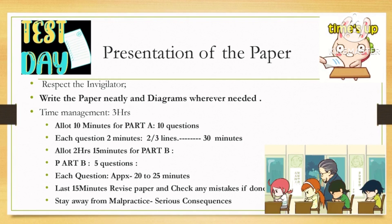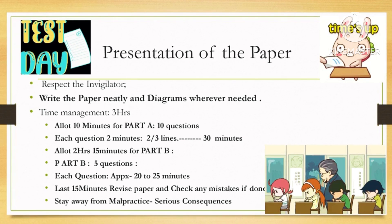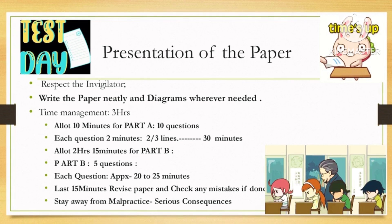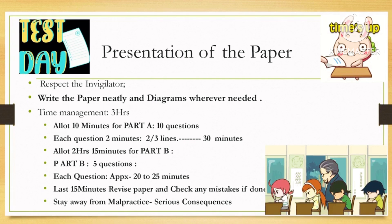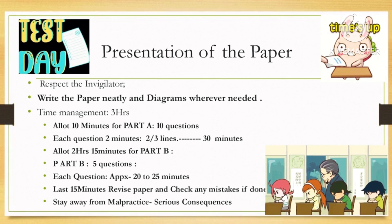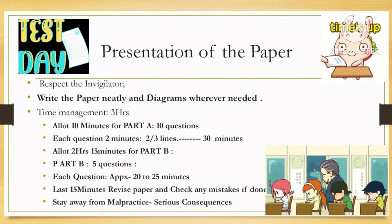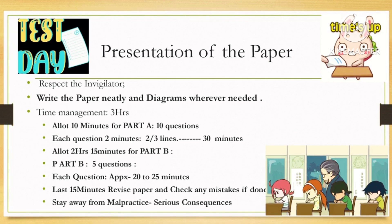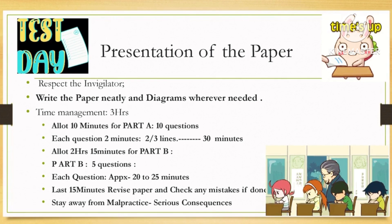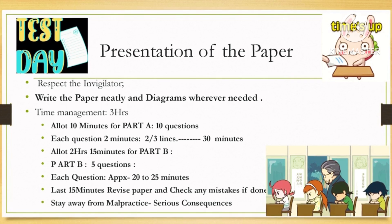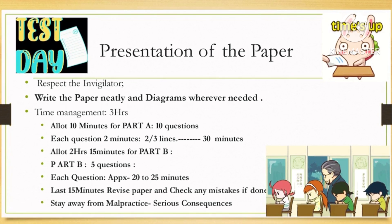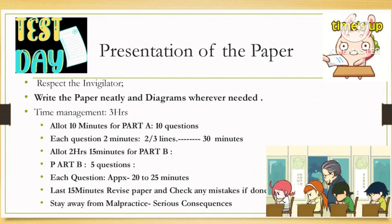Part A contains short answer types of 1 mark each. The 10 questions should each be given 2 to 3 minutes, which takes about 30 minutes to complete Part A. Then move to Part B, where you have 5 long answer questions. Check which question you know best and write the most complete answer you can among the 5 questions with internal choice.